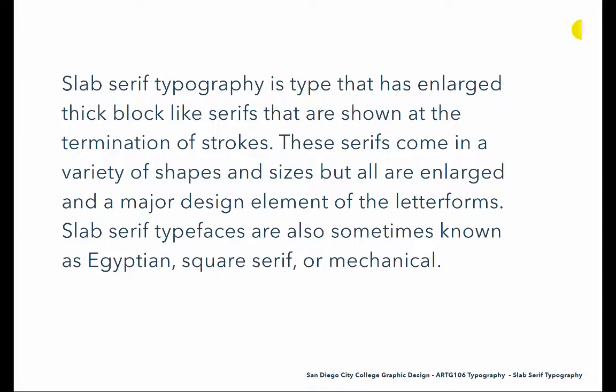Slab serif typefaces started evolving and as they did, they sometimes had the term Egyptian applied to them. That was really a term applied because it was a popular culture at the time these typefaces were released. Square serif describes the look of the serifs, and mechanical refers to the mechanical structure of these typefaces. These really grew out of the Victorian era and were a necessity in terms of attracting attention and having letterforms that spoke very loudly.